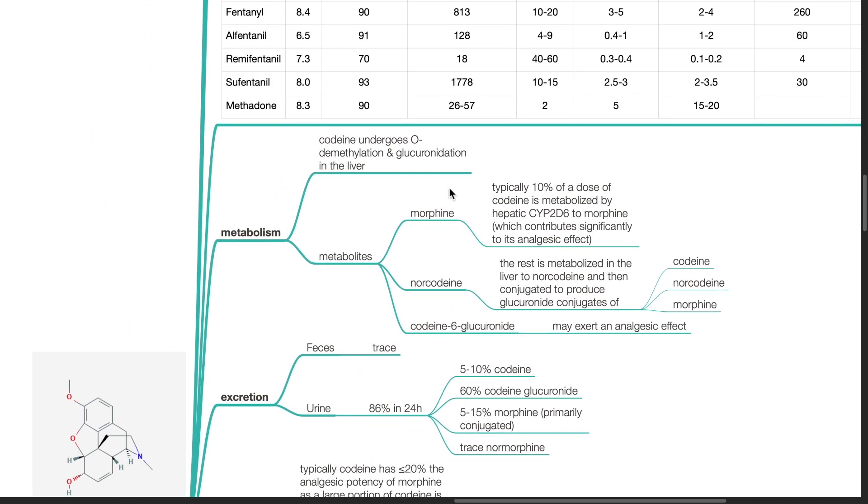Metabolism. Codeine undergoes O-demethylation and glucuronidation in the liver. Metabolites include morphine, norcodeine, and codeine-6-glucuronide. Typically 10% of a dose of codeine is metabolized by hepatic CYP2D6 to morphine, which contributes significantly to its analgesic effect. The rest is metabolized to norcodeine and then conjugated to produce glucuronide conjugates. Codeine-6-glucuronide may exert an analgesic effect.